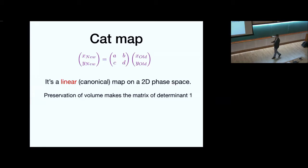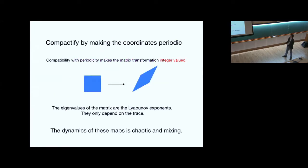So what's a catmap? Catmap is linear physics. You take two coordinates. You transform them by a linear transformation. And you get two new coordinates. And you want to think about it as a linear canonical map on 2D phase space. So if you want to preserve the volume, then the matrix has determinant one. And this looks really boring because we know linear physics. So the idea of the catmap is you compactify by making the coordinates periodic. And then the compatibility with the periodicity makes the matrix transformation integer valued.